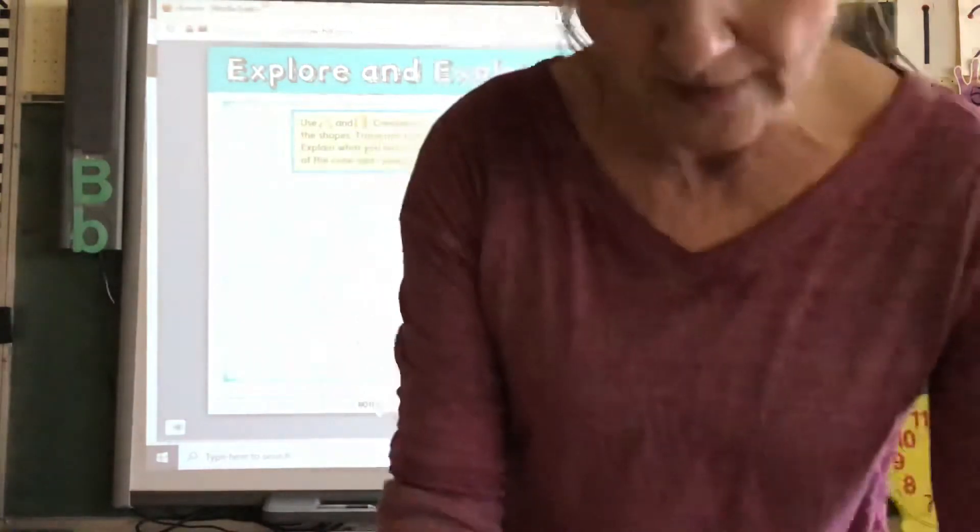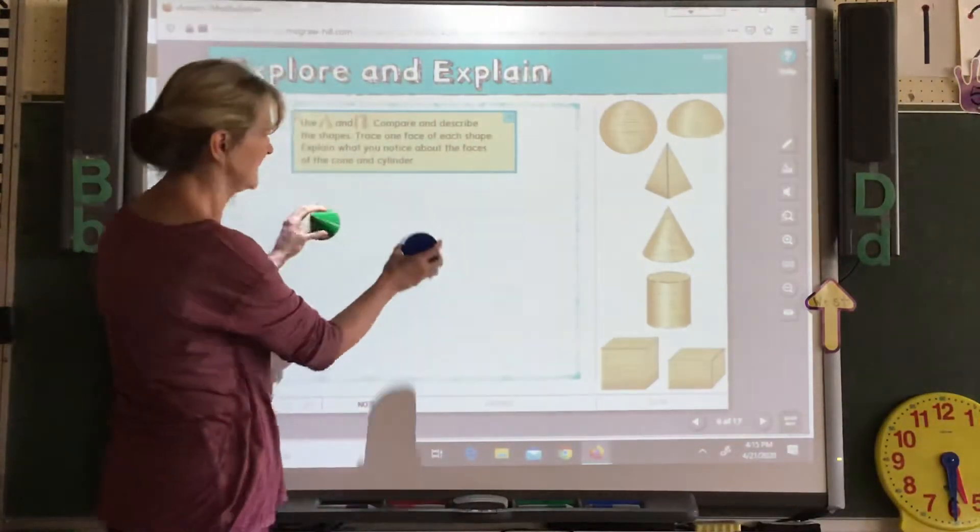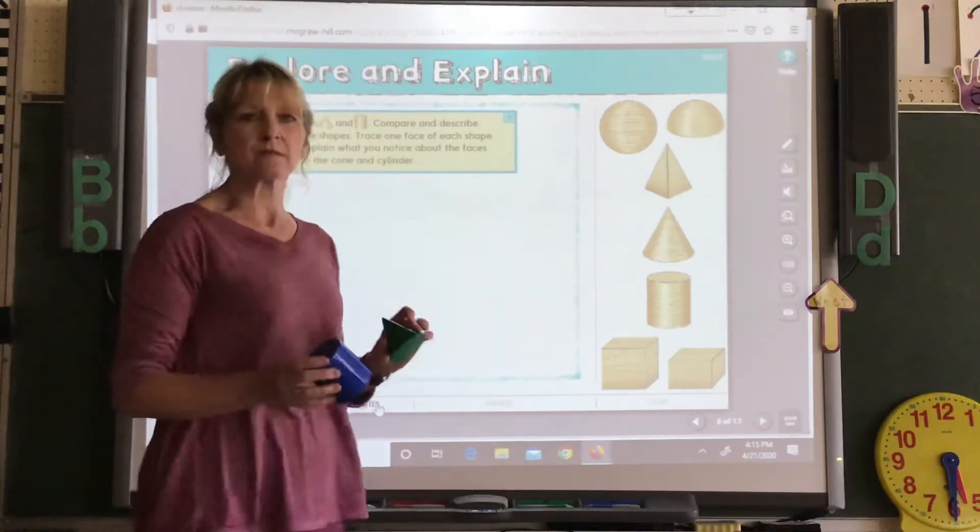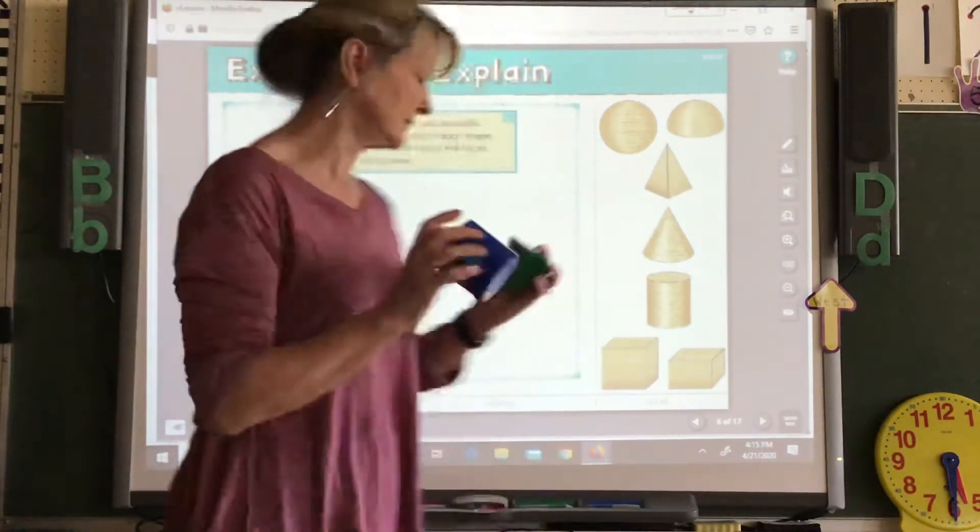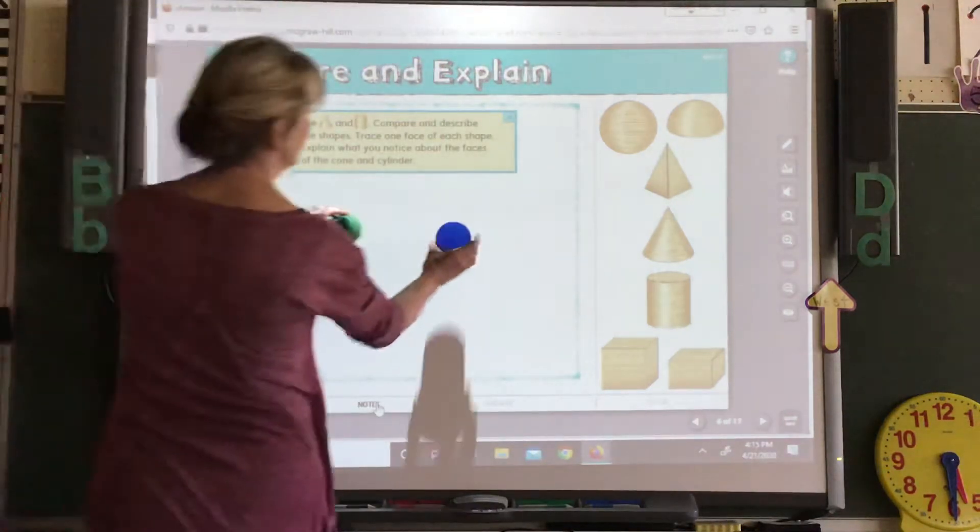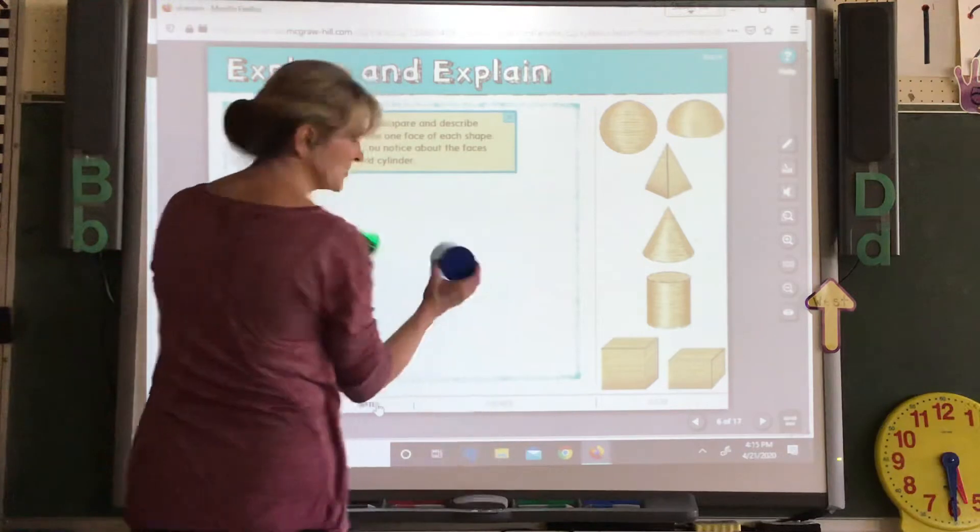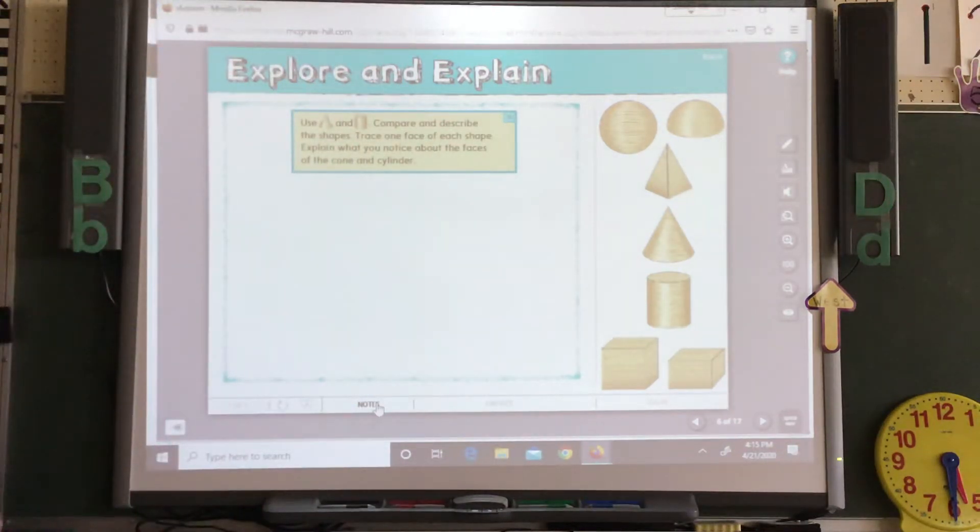Right. So if you traced around those faces, what would you notice? That they have the same faces. Right? Okay, so you do that. You trace the face on your paper the best you can. And then you notice that they're both circles. All right? So turn your page.